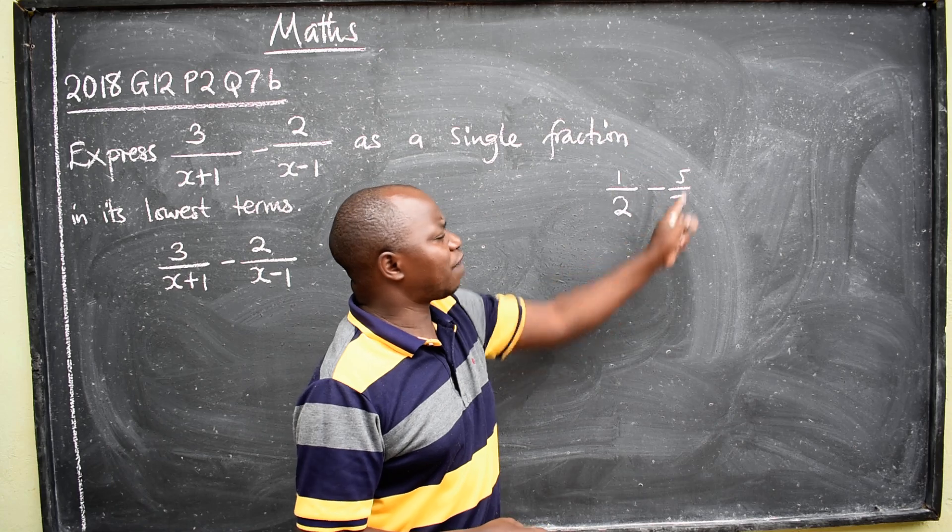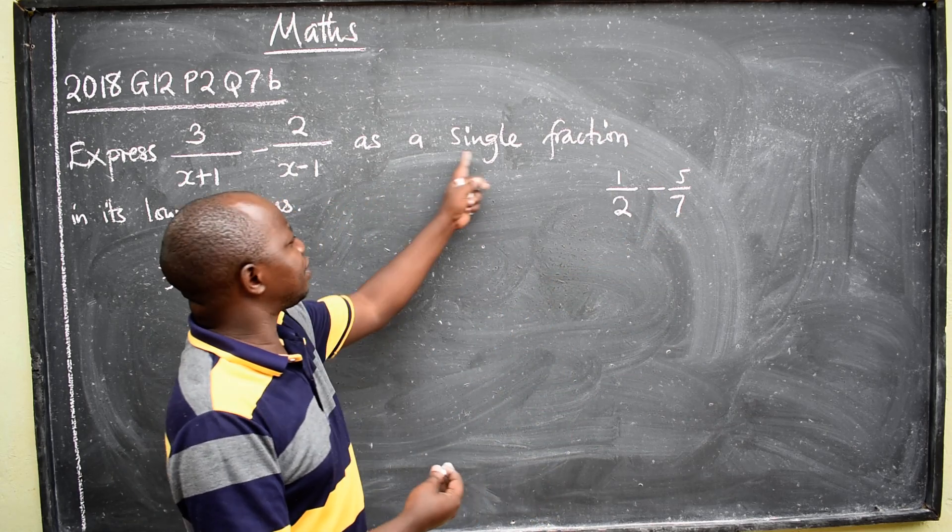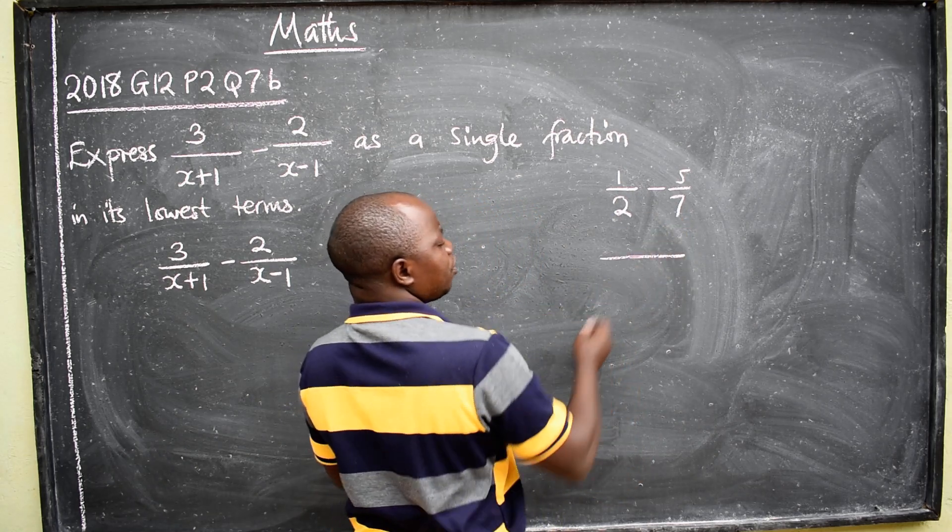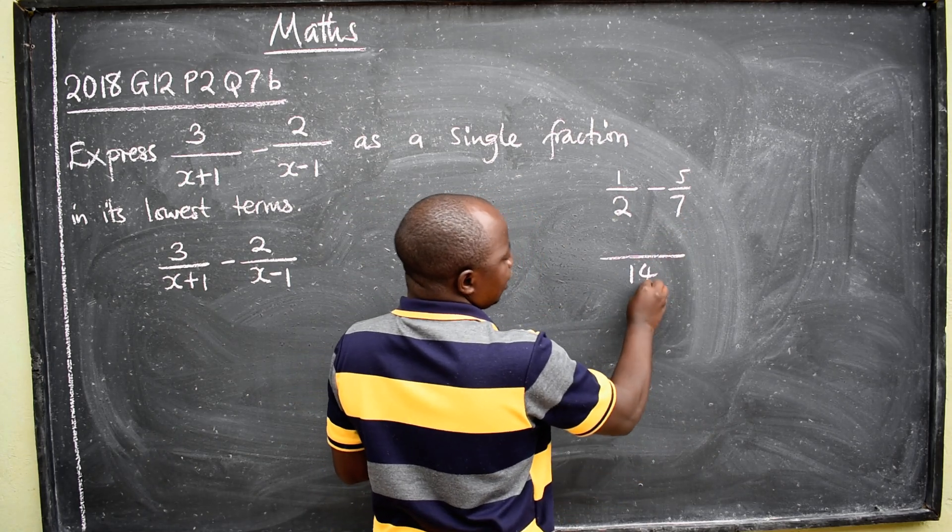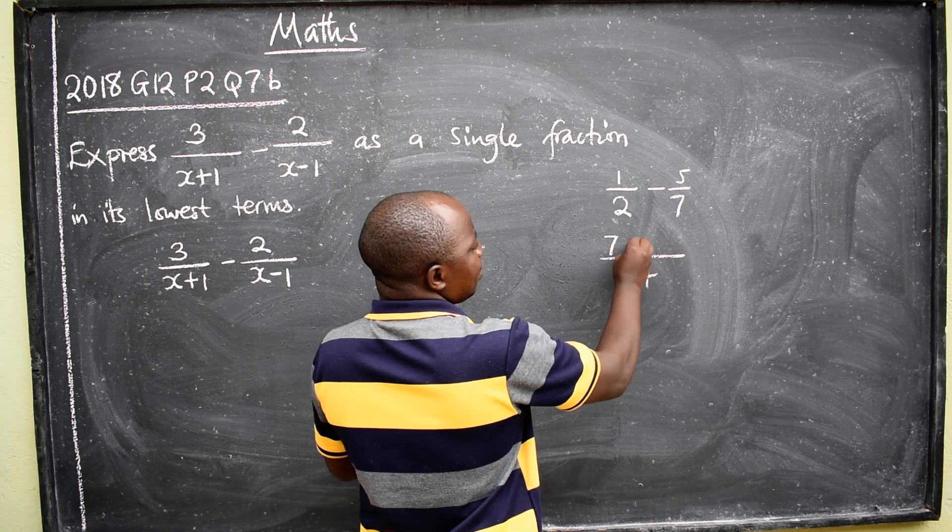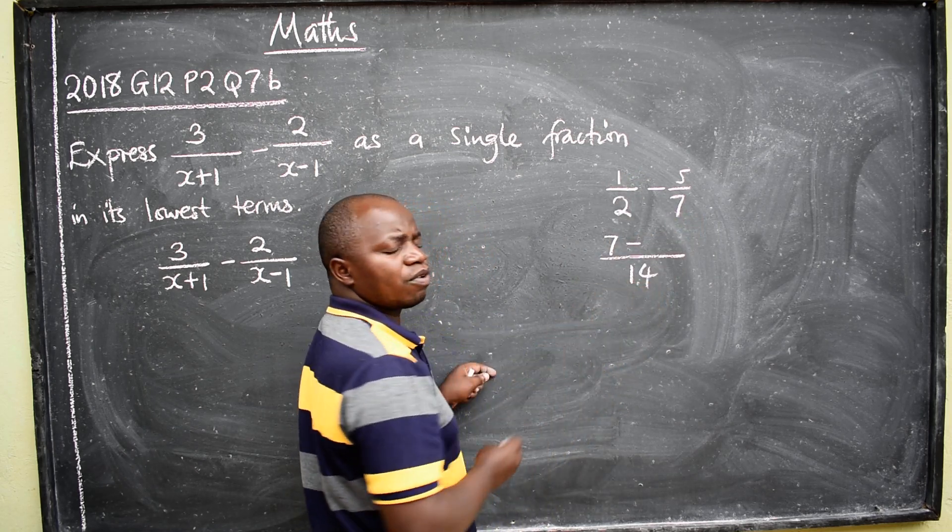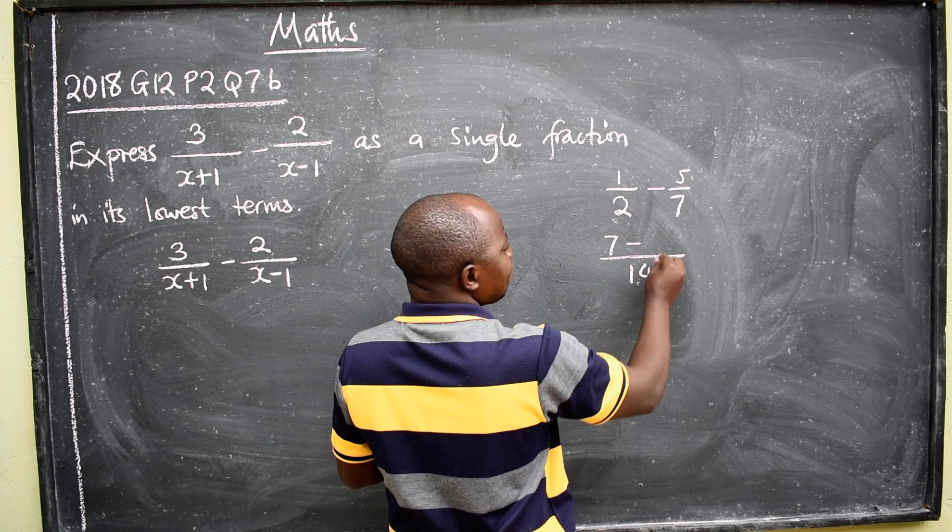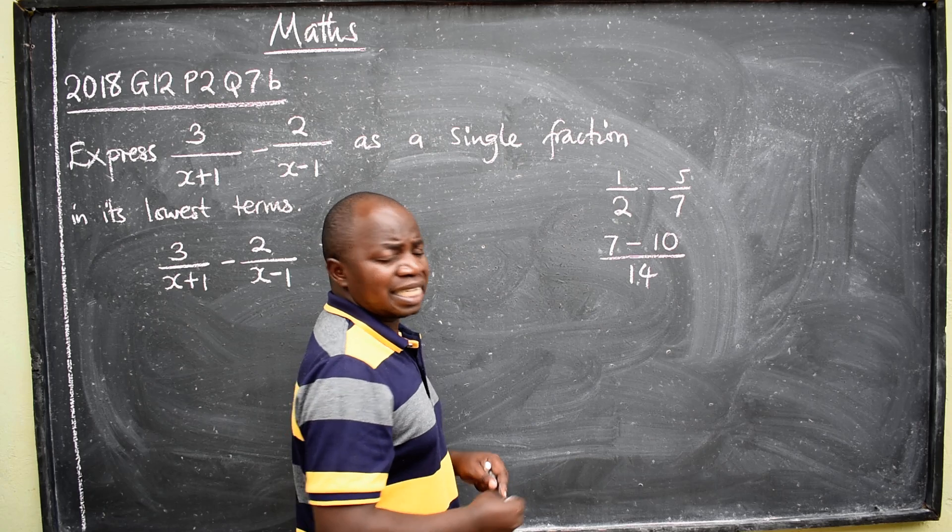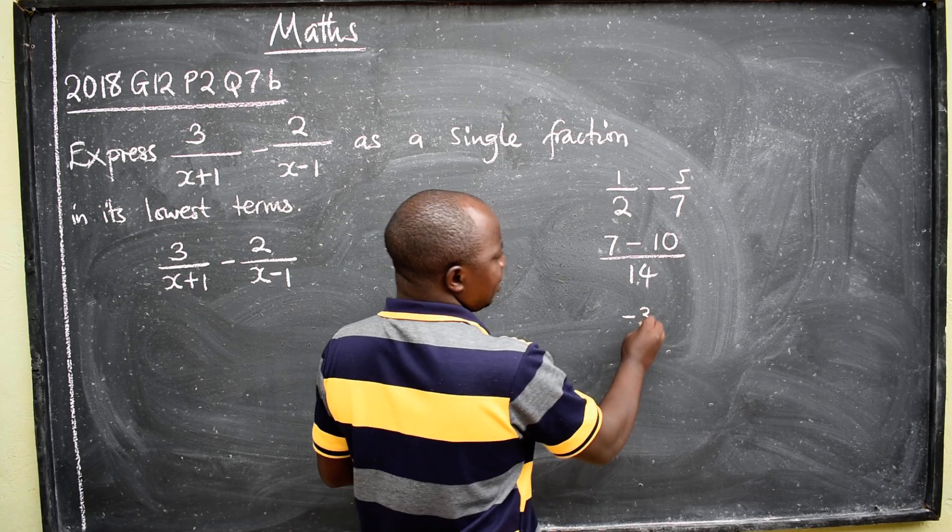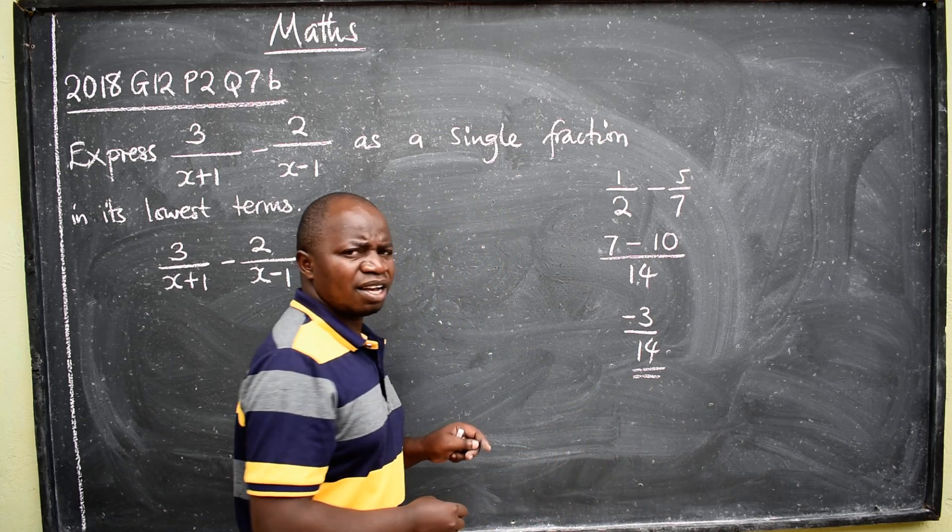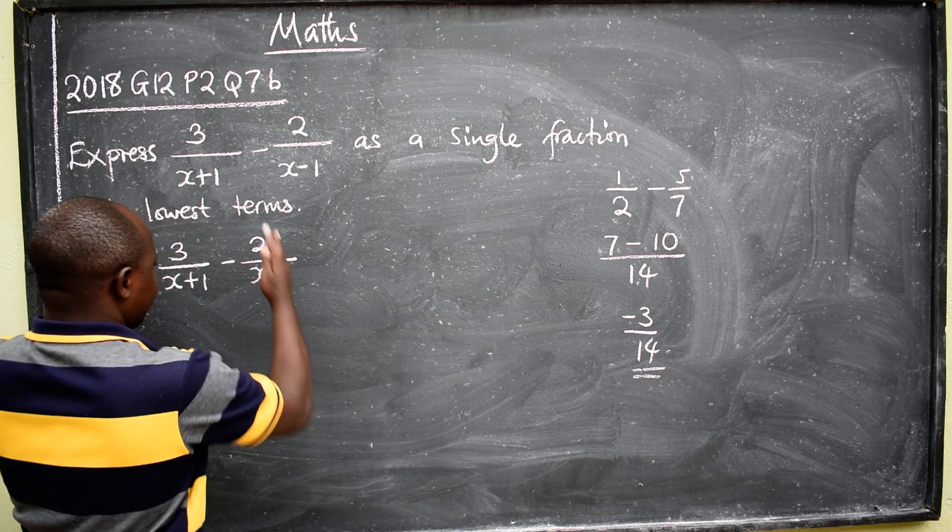If I ask you to find the answer here, it means you are expressing as a single fraction. Because we are going to say over common denominator, it will be 14. How many 2s are in 14? 7 times 1, 7 minus how many 7s are in 14? 2 times 5, it will give us 10. 7 minus 10 will give us negative 3 divided by 14. This will be the answer. It is the same way here.